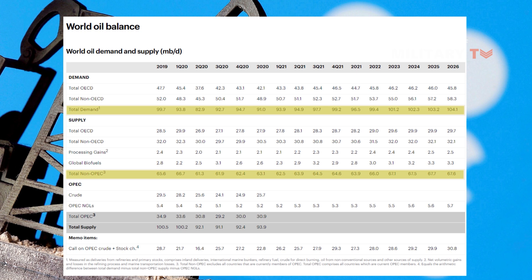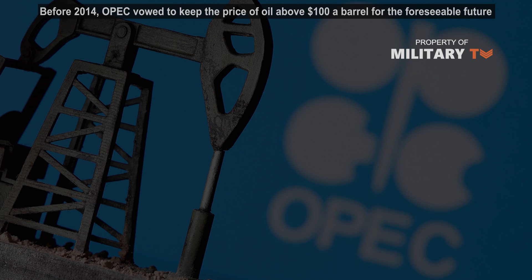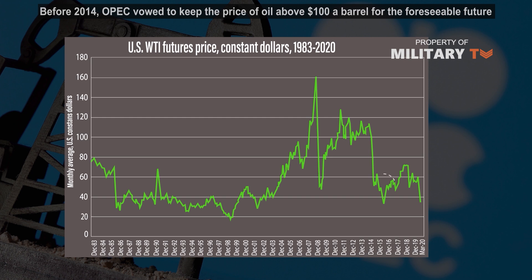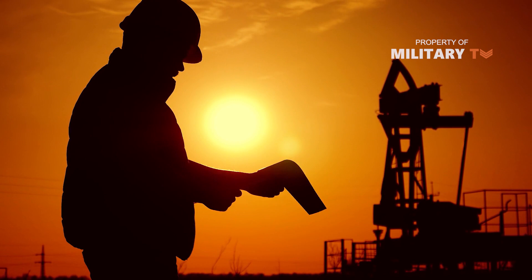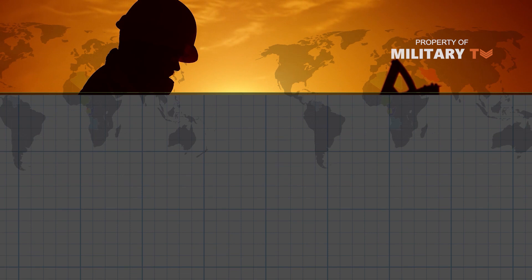OPEC makes decisions based on current supply and demand, and also considers future expectations. Before 2014, OPEC vowed to keep the price of oil above $100 a barrel for the foreseeable future, but midway through that year the price of oil began to tumble — falling from a peak of above $100 a barrel to below $50 a barrel. OPEC was the major cause of cheap oil in that instance, as it refused to cut oil production, leading to the tumble in prices.